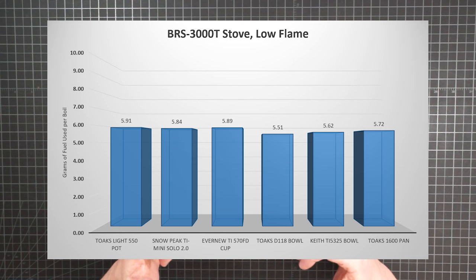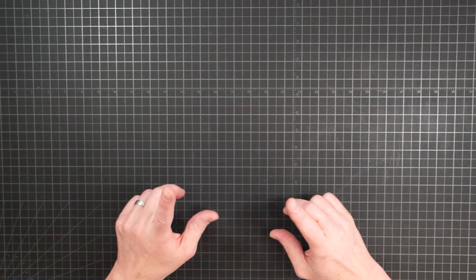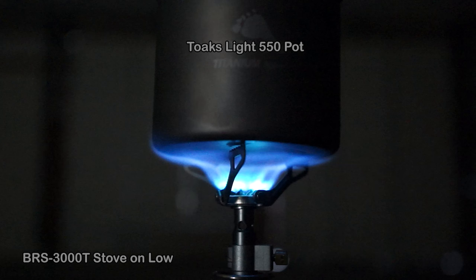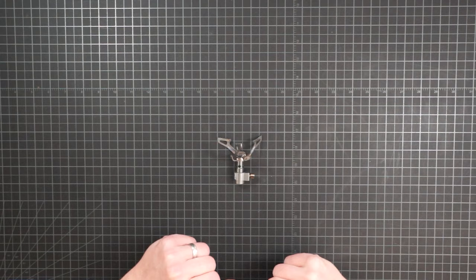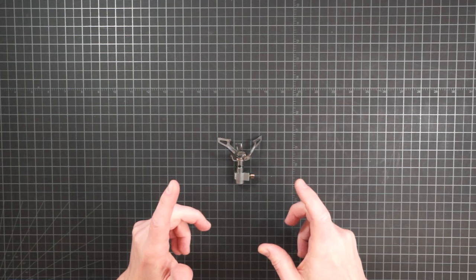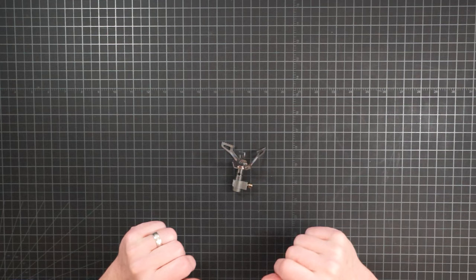And for the BRS stove on medium flame, the pattern was again similar to the Rocket. The BRS was a little more efficient with the small pots and a little less so with the widest bowl and pan. Here's the flame splash on medium. As before, a low flame was more efficient still and the container differences were pretty close to statistically flat. And a look at the flame splashes on low.